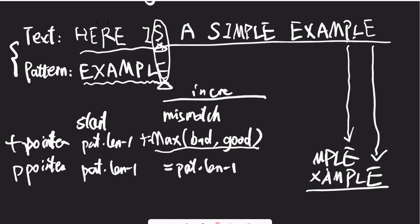When there is a match, it's pretty easy. We just decrease both the text pointer and the pattern pointer by one.